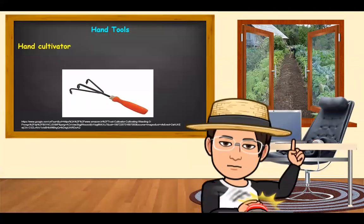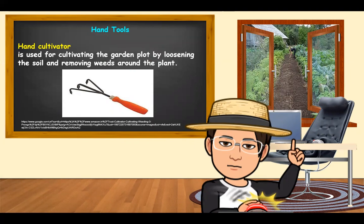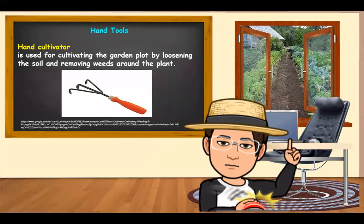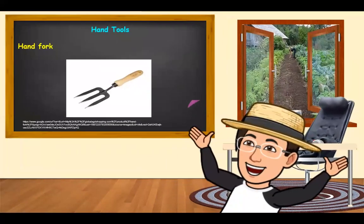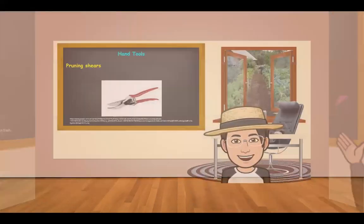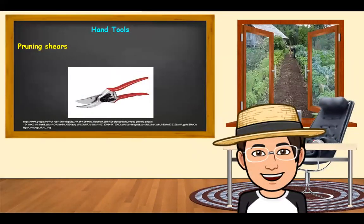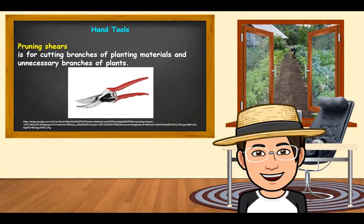The next hand tool is what we call the hand cultivator. A hand cultivator is used for cultivating the garden plot by loosening the soil and removing weeds around the plant. Next is the hand fork, which is a hand tool used for inter-row cultivation. Pruning shears is also a hand tool used for cutting branches of planting materials and unnecessary branches of plants.